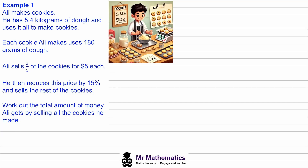In this video I'm going to show you how to combine both fractions and decimals of an amount within a real life problem. We're told that Ali makes cookies — he has 5.4 kilograms of dough and uses all of it to make the cookies. Each cookie uses 180 grams. He sells three fifths of the cookies at five dollars each, then reduces the price by 15 percent to sell the rest. We need to work out the total amount of money Ali makes.